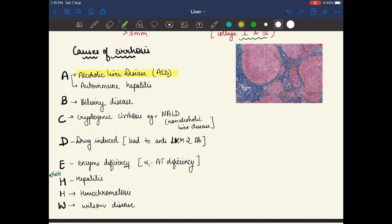A stands for alcoholic liver disease or autoimmune hepatitis. B stands for biliary disease. C stands for cryptogenic cirrhosis, an example of non-alcoholic liver disease. D for drug induced, which leads to anti-LKM2 antibodies. E for enzyme deficiency like alpha-1 antitrypsin deficiency.